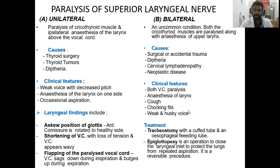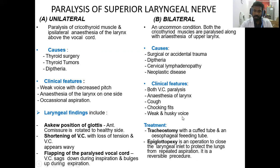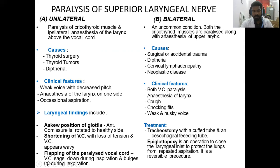The treatment for bilateral superior laryngeal nerve palsy includes tracheostomy with a cuffed tube and an esophageal feeding tube to manage both the airway and feeding. You can also do an epiglottopexy — an operation to close the laryngeal inlet to protect the lungs from repeated aspiration. Since food enters the larynx and causes coughing, the epiglottis is sutured to close the laryngeal inlet. It is a reversible procedure, meaning you can always revert back to normal.